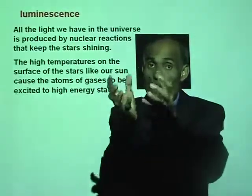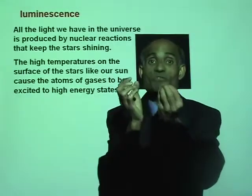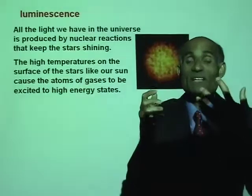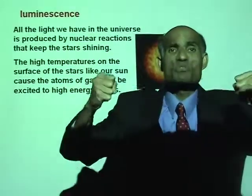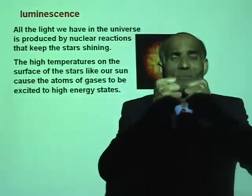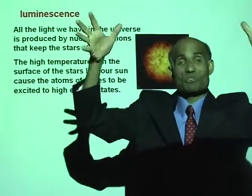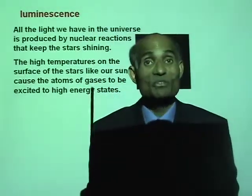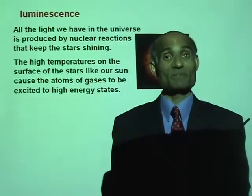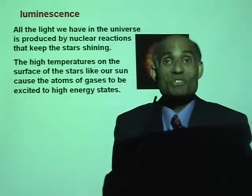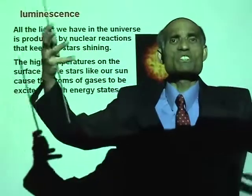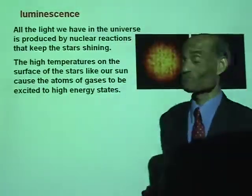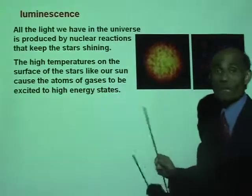The core temperature is 15 million degrees Celsius, and that kind of temperature is needed to produce nuclear fusion. But the surface temperature of the sun is about 5,500 degrees Celsius. It is at this temperature that incandescence happens. Let me try to explain this.